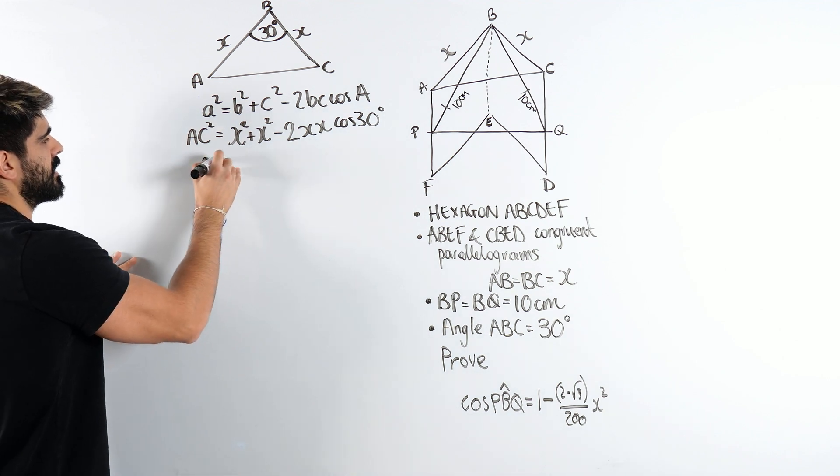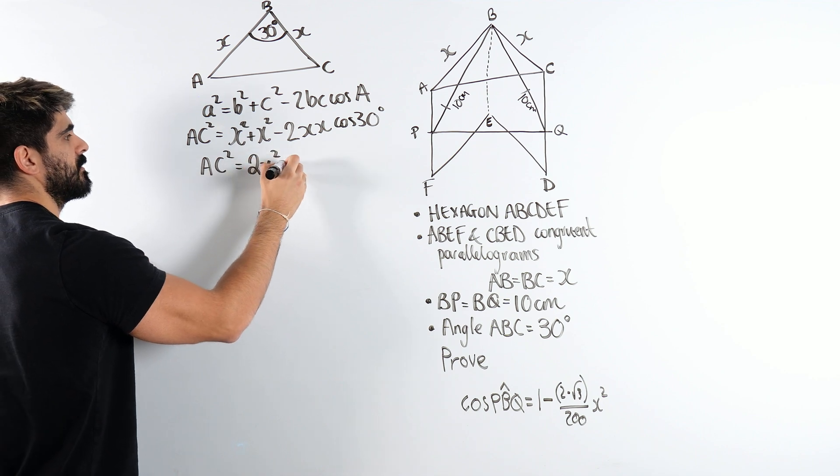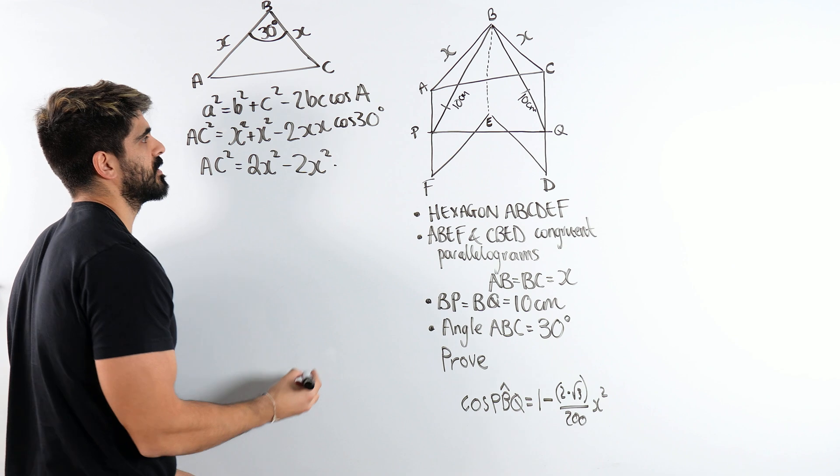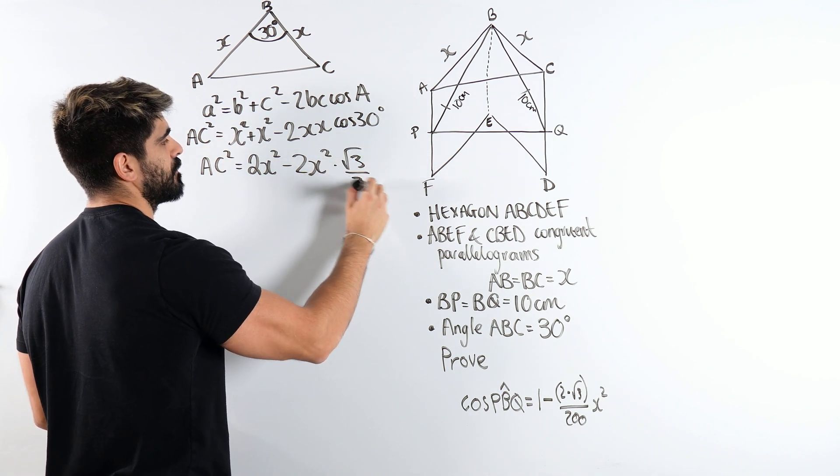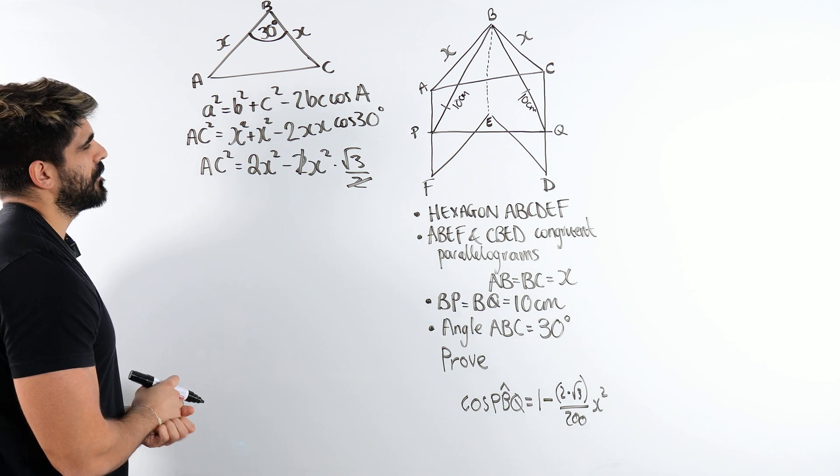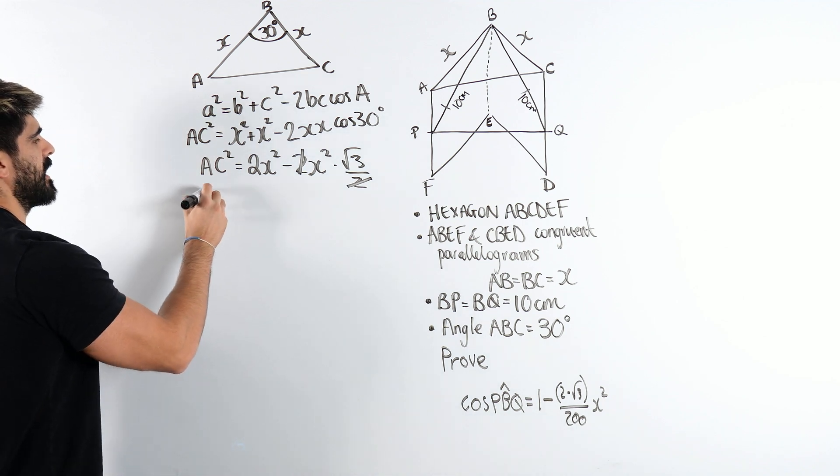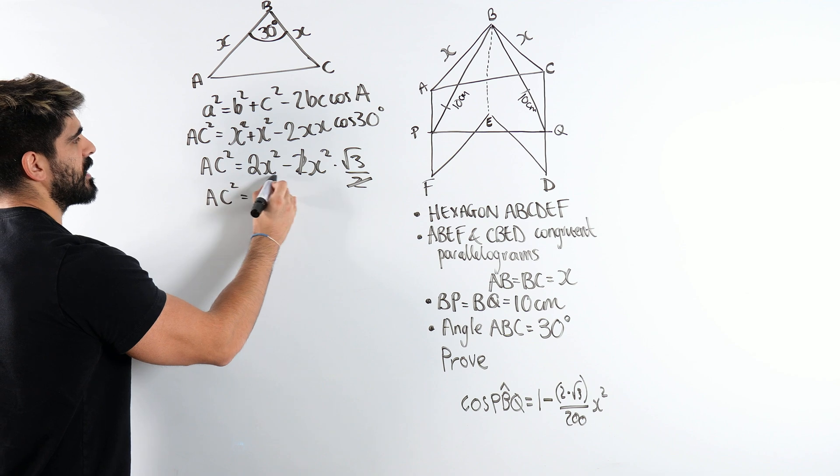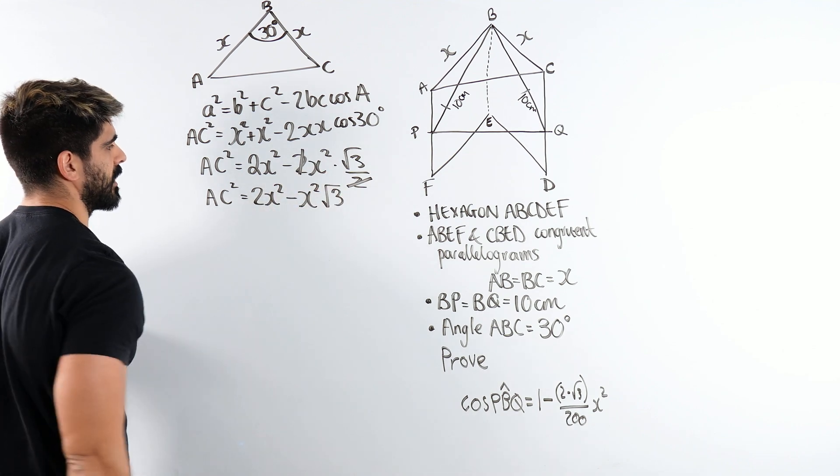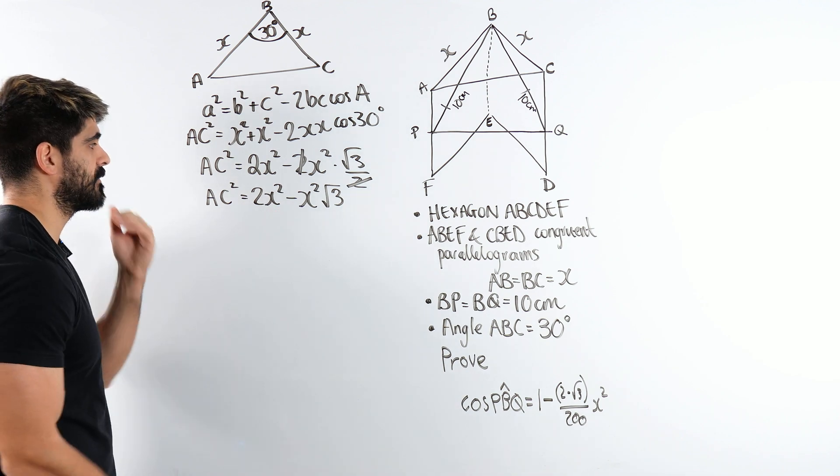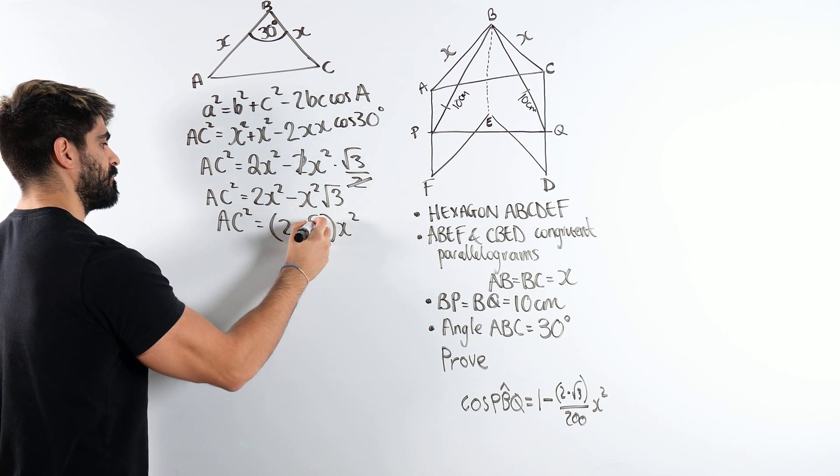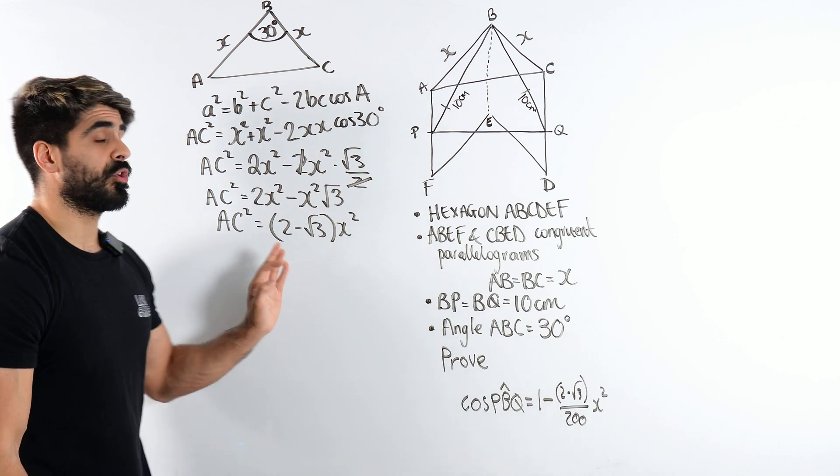So we've got AC squared is 2X squared minus 2X squared. But don't forget, you need to know what cos of 30 is in your non-calculator paper exam. Cos of 30 is root 3 over 2, which is great because then the 2's cancel. So I have AC squared is 2X squared minus X squared root 3. Now obviously you can factorize out X squared. So I could say AC squared is X squared times (2 minus root 3). Now, I'm not going to root that. I mean in the answer they have X squared, that's good.